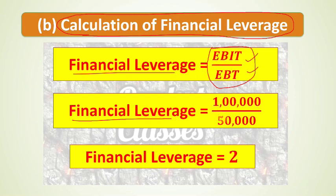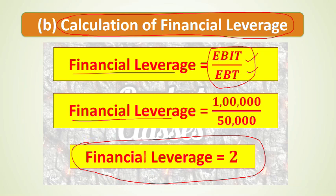Now for financial leverage, the formula is EBIT divided by EBT. Putting in our values: EBIT is 1 lakh rupees and EBT is 50,000 rupees. So financial leverage = 1 lakh / 50,000 = 2.